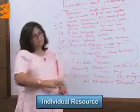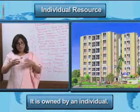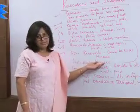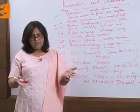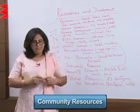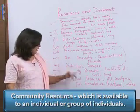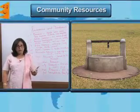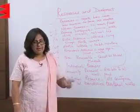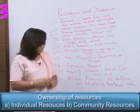Individual resources, as the name suggests, are materials, products, or buildings owned by one individual — a one-man property. The owner utilizes it as he wants because it belongs to him. Community resources are objects, resources, or buildings available to a group of individuals — like a well, a pond, or a marriage hall — because more than one person can make use of that resource.